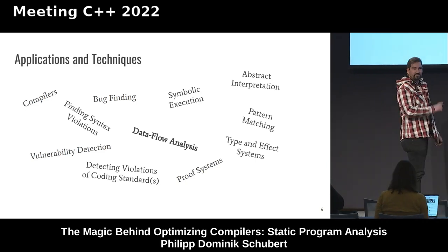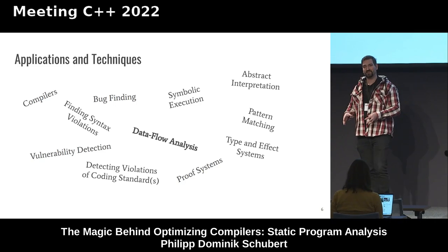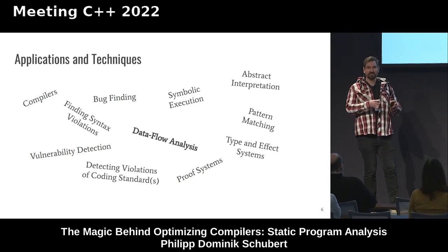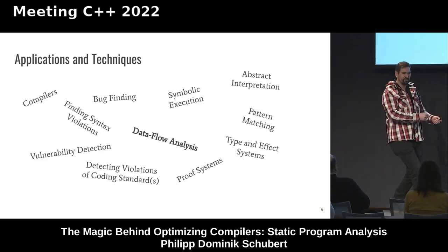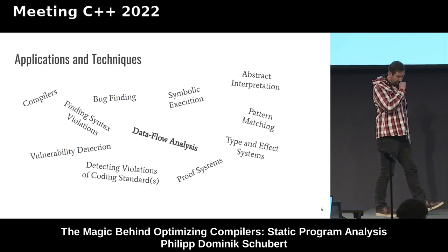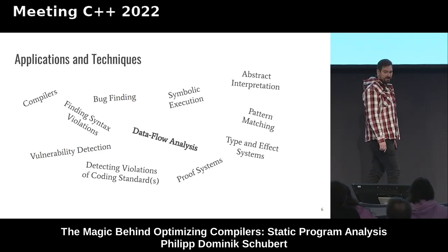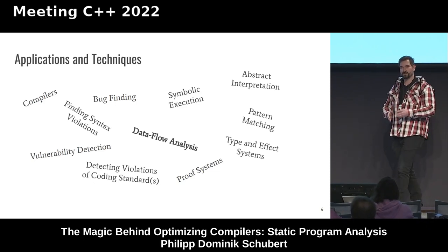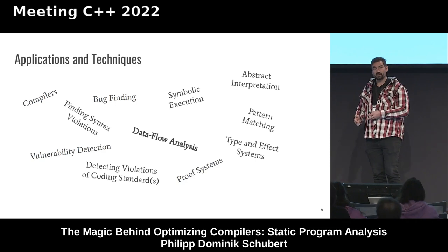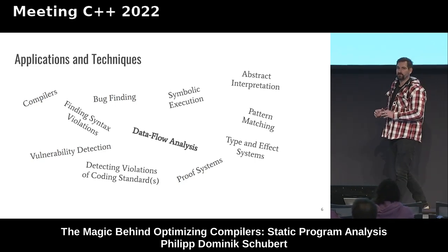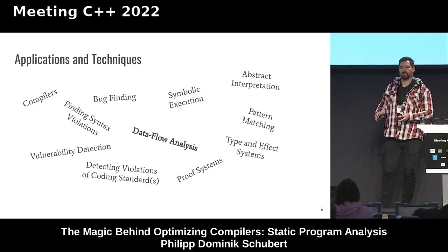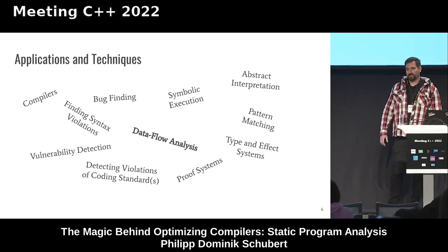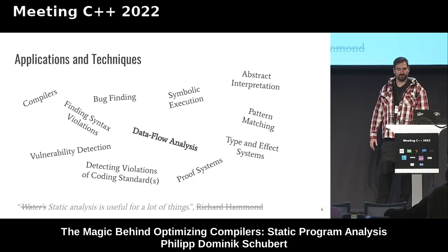We have type and effect systems. In C++ you can use the type system and make it a type-safe language, whereas in C, declaring a variable as integer mainly says you want four bytes of memory. We have proof systems, symbolic execution — that's what the Clang static analyzer implements — a technique that analyzes all program paths, path by path. It can be expensive, so it's typically only used for individual compilation units and not whole program. And then we have data flow analysis, the main topic of this talk.